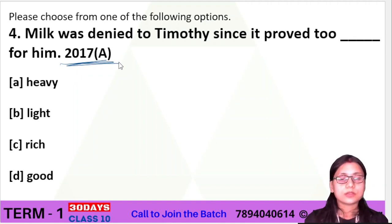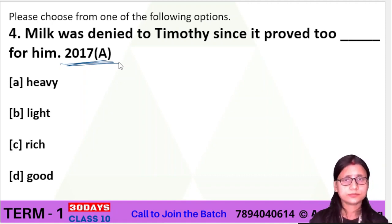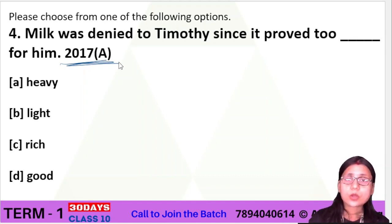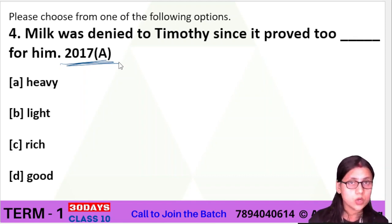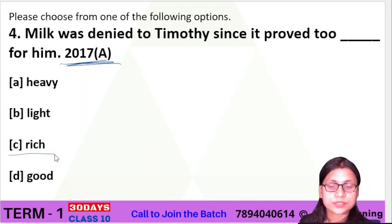The options for why milk was denied are: very heavy, very light, very rich, or very good. The correct answer is option C — rich. Milk proved too rich for Timothy, so it was denied to him.